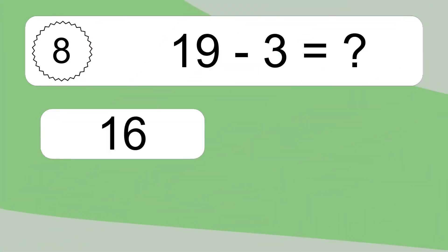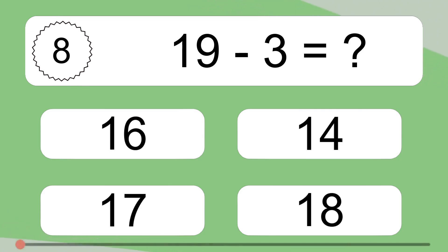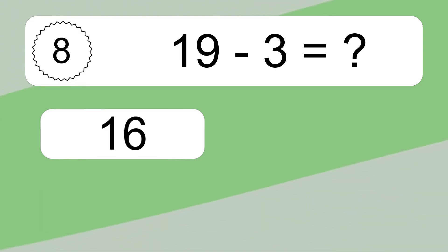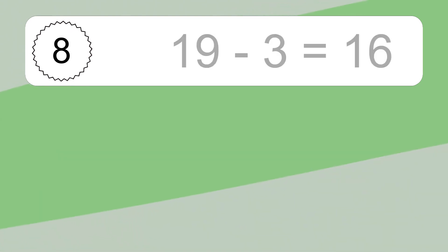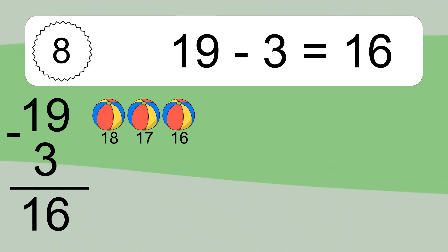19 minus 3 equals what? 19 minus 3 equals 16. Let's count it: 18, 17.